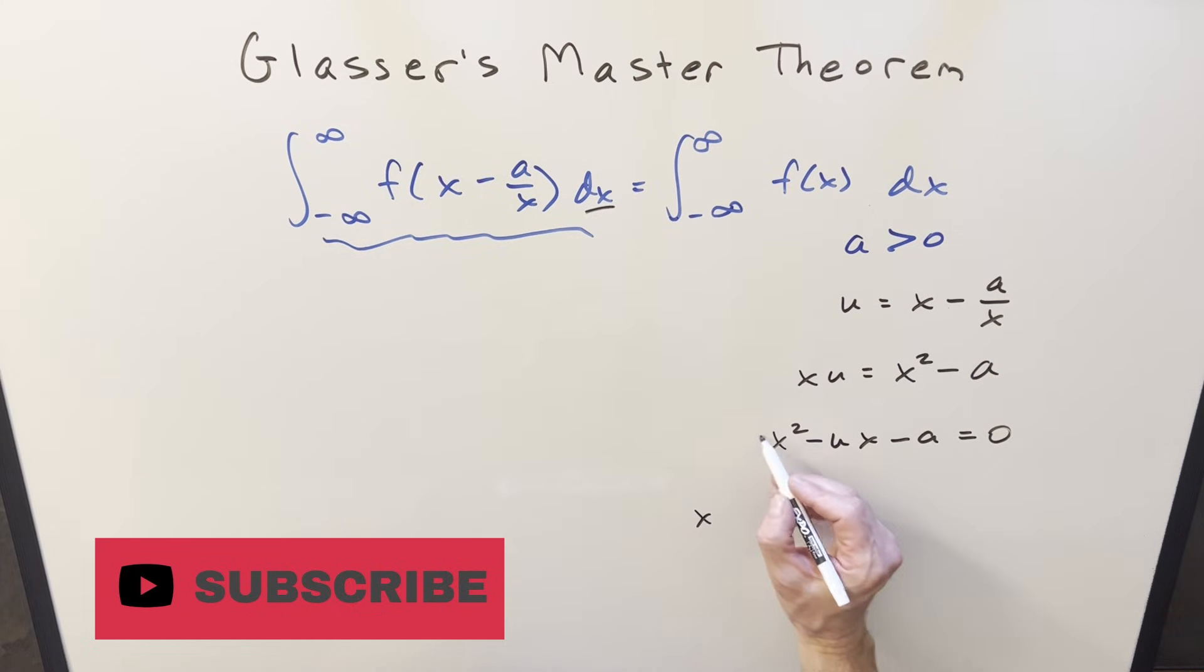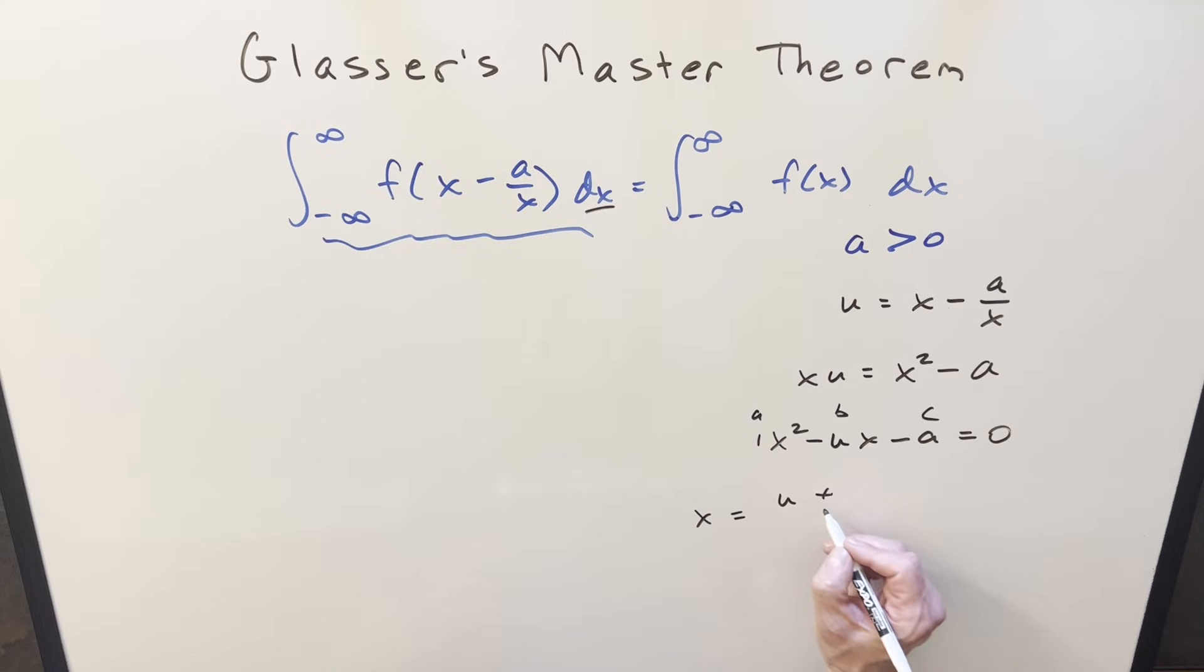So then from here, what we'll do is we can just solve for x using the quadratic formula. So it's going to be like our coefficients are going to be a, b, c. So we're going to have x equals minus the b value, which is just u plus or minus square root b squared. That's going to be u squared minus 4, a value 1, c value. Sorry, I know it's confusing when we've got a and c going on in two different places, but don't worry too much about that.